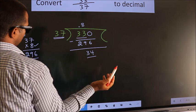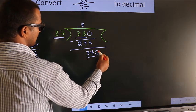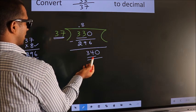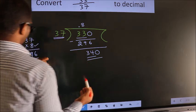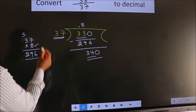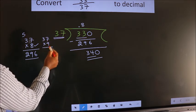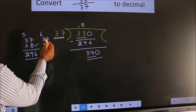Here we have 34. 37, 34 is smaller than 37, and we already have the decimal, so we can directly take 0. So 340. A number close to 340 in the 37 table is, we go with 9. So 37 times 9.